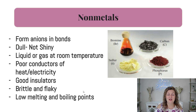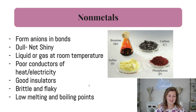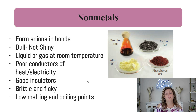Moving on to nonmetals. They form anions when they bond, which are negative ions. They're going to be dull — not shiny, not lustrous. They're going to be liquid or gas at room temperature. And they're very poor conductors of heat and electricity; in other words, they're really good insulators. They are brittle and flaky, and they are going to have very low melting and boiling points.